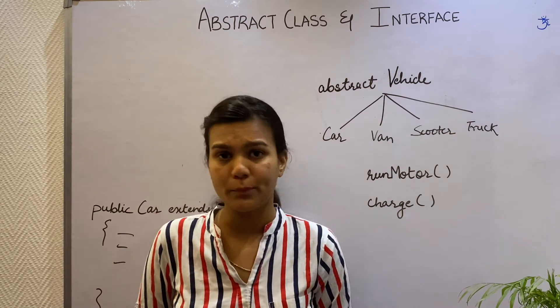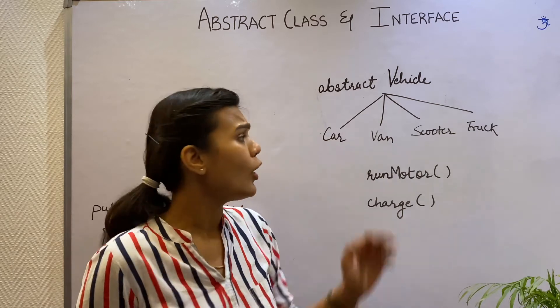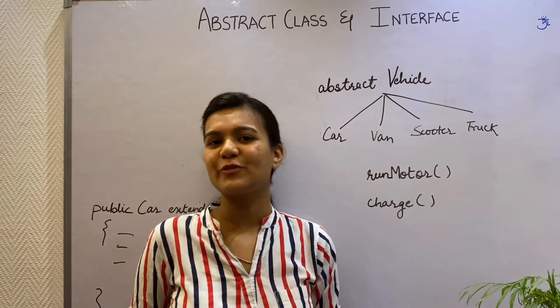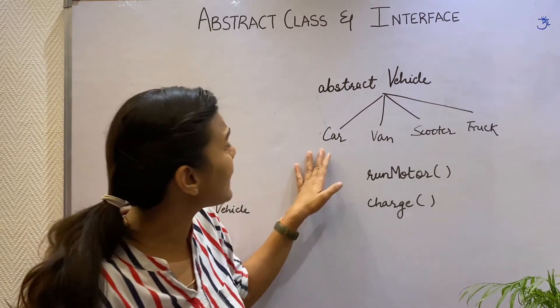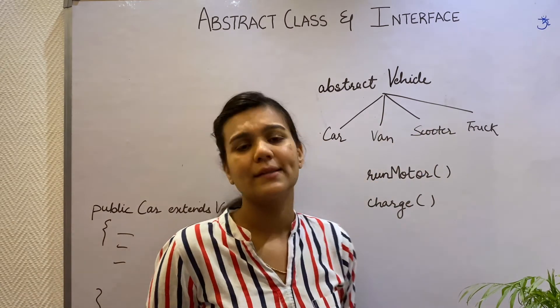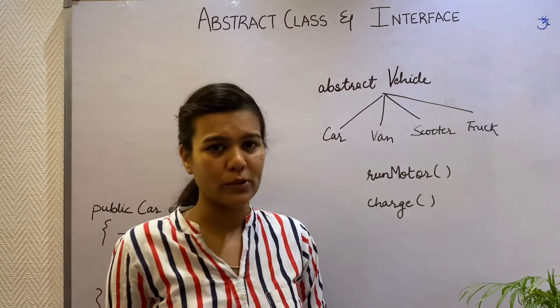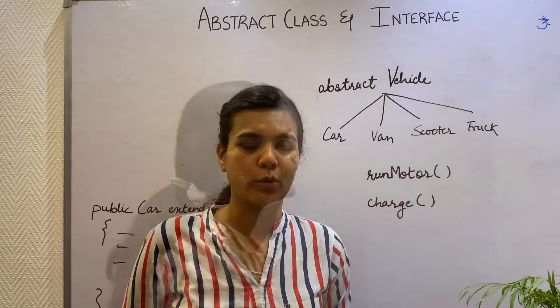Now where do I put these methods for implementation? I can certainly not put these methods in my abstract Vehicle class because then all the other classes that are extending my Vehicle class will have to provide the implementations. I can also not put them in my Car class because tomorrow if I have a van or a scooter that's electric, then what if the protocol changes from the car to scooter and the method becomes from run motor to drive motor or move motor.